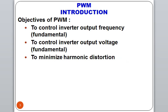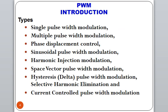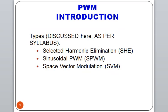If we talk about the objective, PWM's objective is to control the output frequency and voltage and minimize the harmonic distortion. There are many types, but as per the syllabus, we study only 3 types: Selective Harmonic Elimination (SHE), Sinusoidal PWM, and Space Vector Modulation.